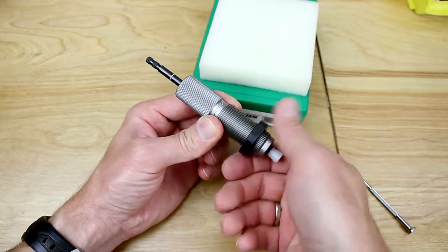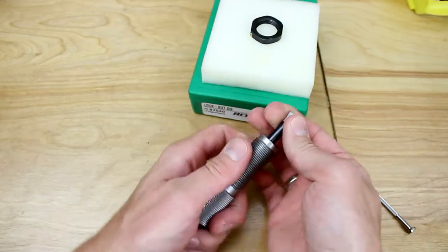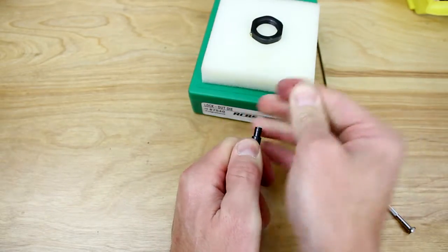So we are going to start by removing the lock ring and then we are going to pull off the foot that is powder activated.